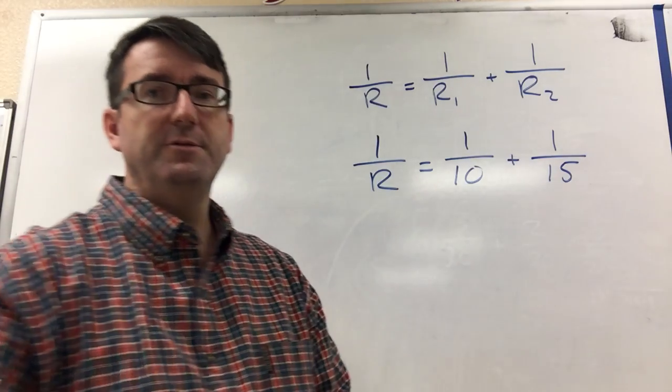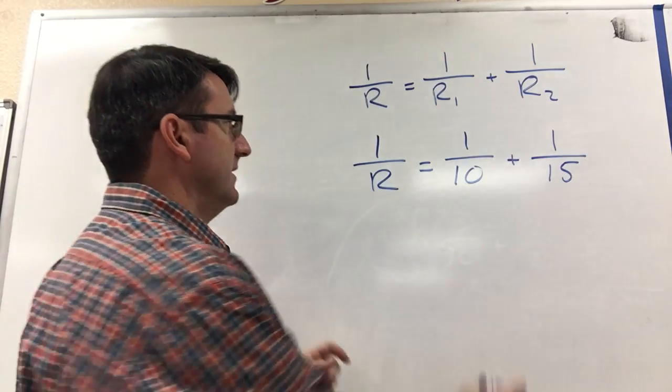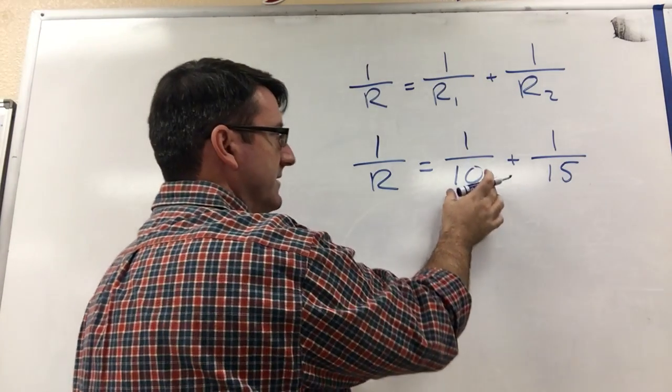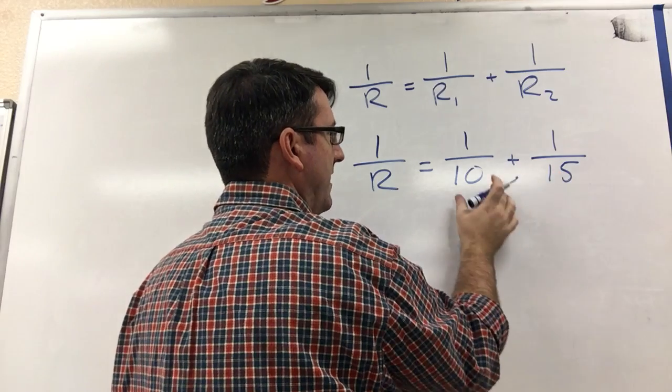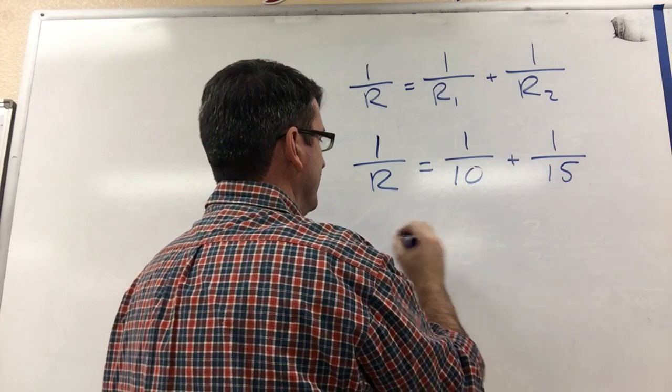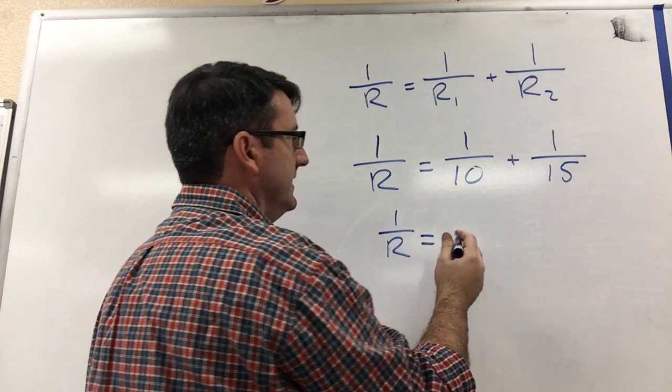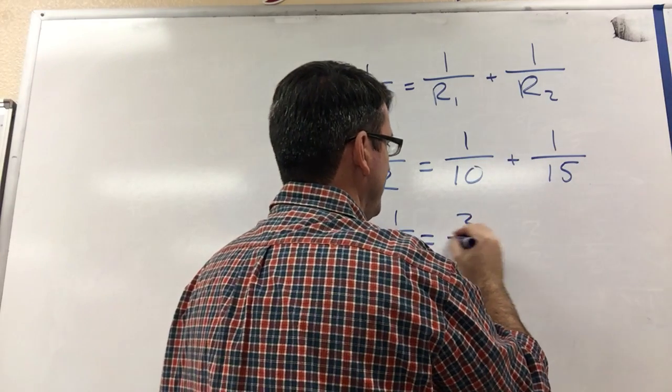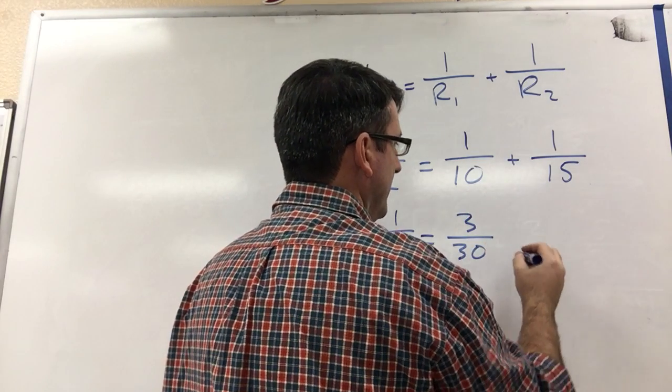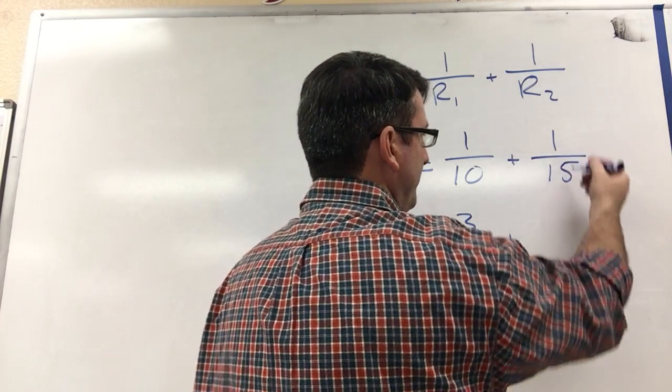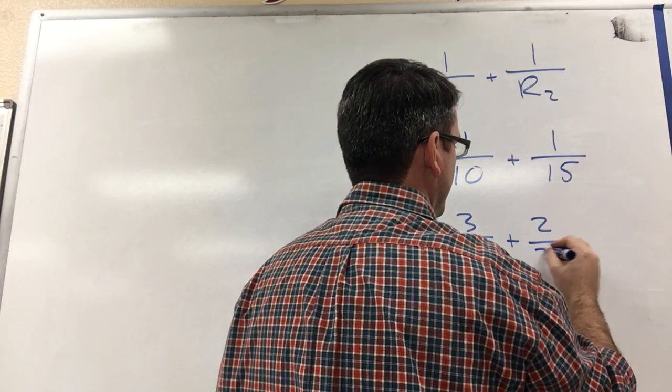To add two fractions, you need a common denominator. So let's get a common denominator here. The lowest common denominator would be 30. So 1 over R is equal to 1 tenth is the same as 3 thirtieths, and 1 fifteenth is the same as 2 thirtieths.